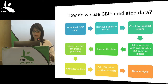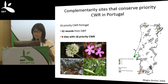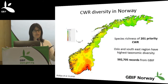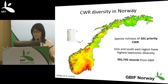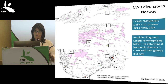Some examples: 32 GBIF records were used to establish complementary conservation sites for priority crop wild relatives in Portugal. GBIF data has also been used to identify hotspots of crop wild relatives in Spain. In Norway, there has been a very productive collaboration with GBIF Norway, with almost 600,000 records obtained through GBIF. These records were used to identify complementary sites to conserve priority crop wild relatives in Norway, and further molecular marker analysis will determine whether taxonomic diversity correlates with genetic diversity.